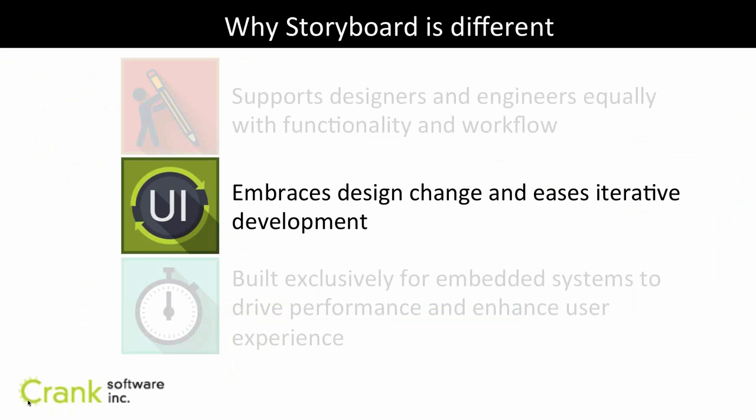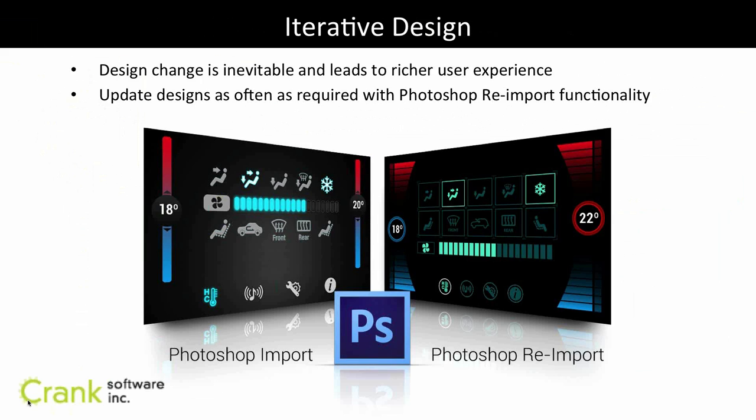How do we leverage and manage the iteration that happens inside of an embedded system? We are not the only UI solution to do a Photoshop import, but a lot of them — that's the end of their integration for designers. They pull in the Photoshop file and then the engineers take over. The problem is the design changes — it's not going to be long before the designer comes and says 'here's my updated Photoshop file,' and at that point the engineers have to look and say, well, can I piecemeal put this in or do I have to start all over again?